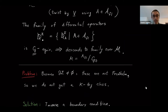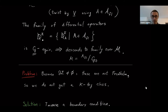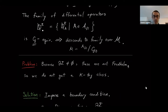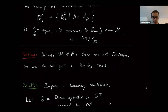The basic problem is that Sigma has a boundary, so these are not Fredholm operators. For a K-theory class — where K-theory means homotopy classes of maps from M into the space of Fredholm operators — we really want a family of Fredholm operators with finite-dimensional kernel and cokernel. Because of the boundary, that's not true here.